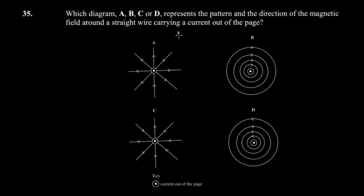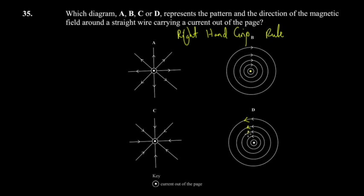To find the direction, use the right-hand grip rule. Imagine the current coming out of the paper. Make a fist with your thumb relaxed and pointing outward — your thumb points in the direction of the current (away from the screen), and your curled fingers show the direction of the magnetic field.